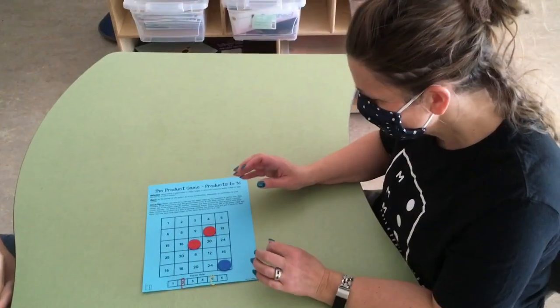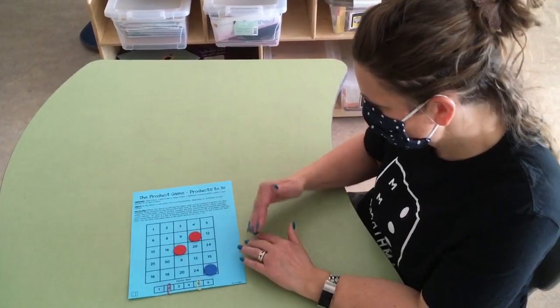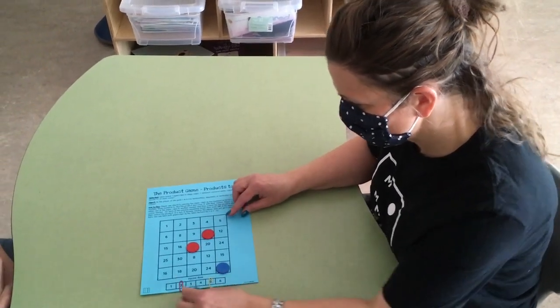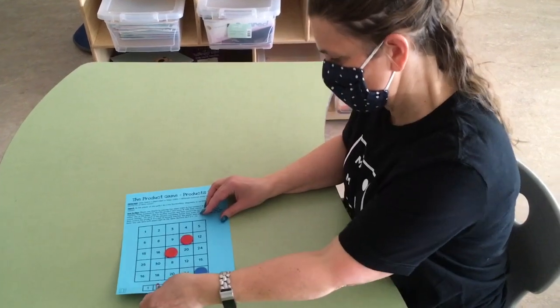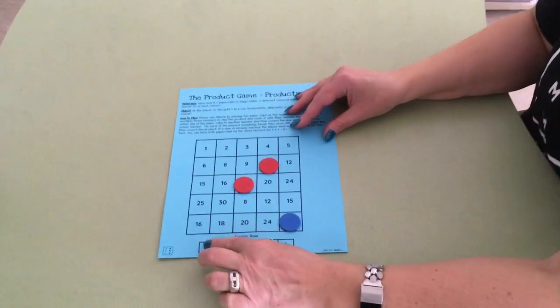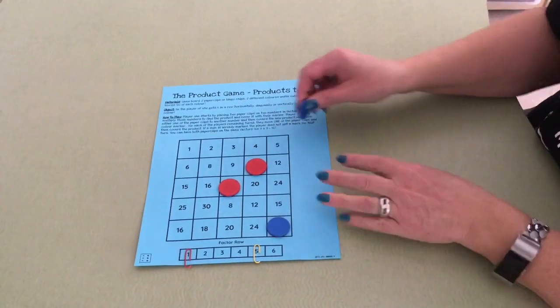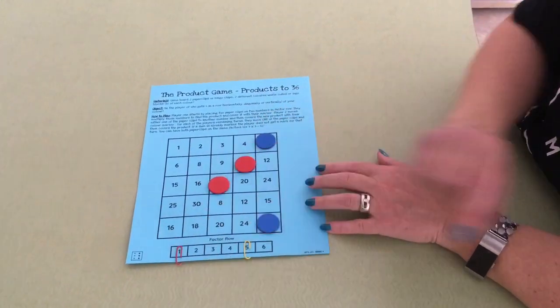Oh, so I want to block her diagonal but keep me going in a vertical or horizontal line. So I'm going to move this one to the one and have one times five. And I'm going to put a counter here because then she has to move one of them to get 30 or 16.